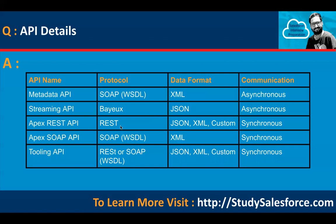Apex REST API: protocol REST, data format JSON and XML with custom, communication synchronous. Apex SOAP API: protocol SOAP, data format XML, communication synchronous. Tooling API: protocol REST or SOAP, data format JSON, XML, and custom, communication synchronous.